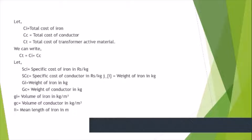Let SCI be the specific cost of iron in rupees per kg, SCC be the specific cost of conductor in rupees per kg — the conductor mostly uses copper. GI is the weight of iron in kg, GC is the weight of conductor in kg, small GI is the volume of iron, small GC is the volume of conductor, and LI is the mean length of iron in meters.